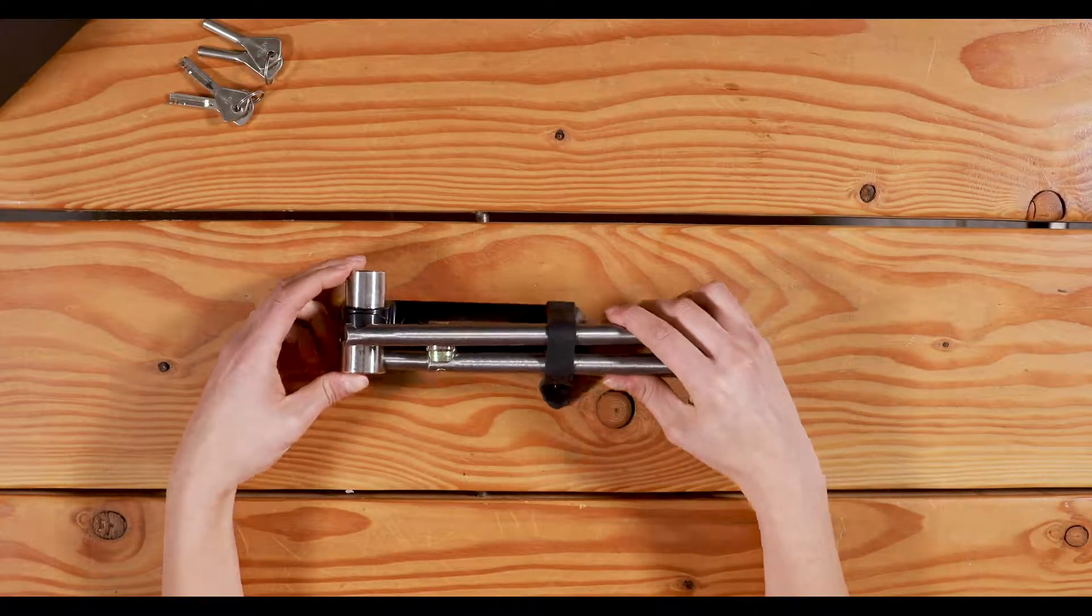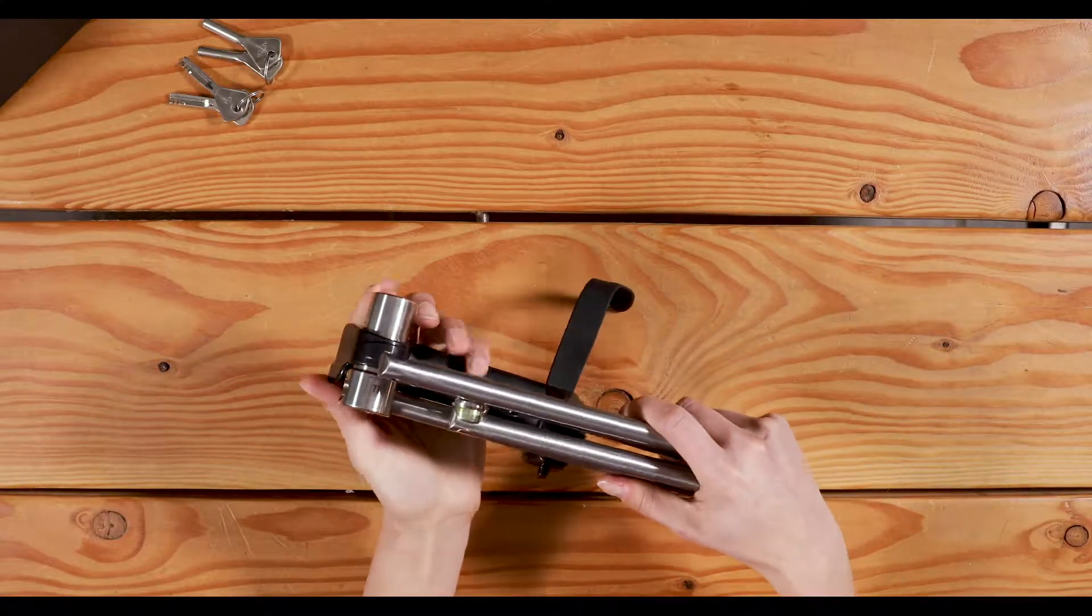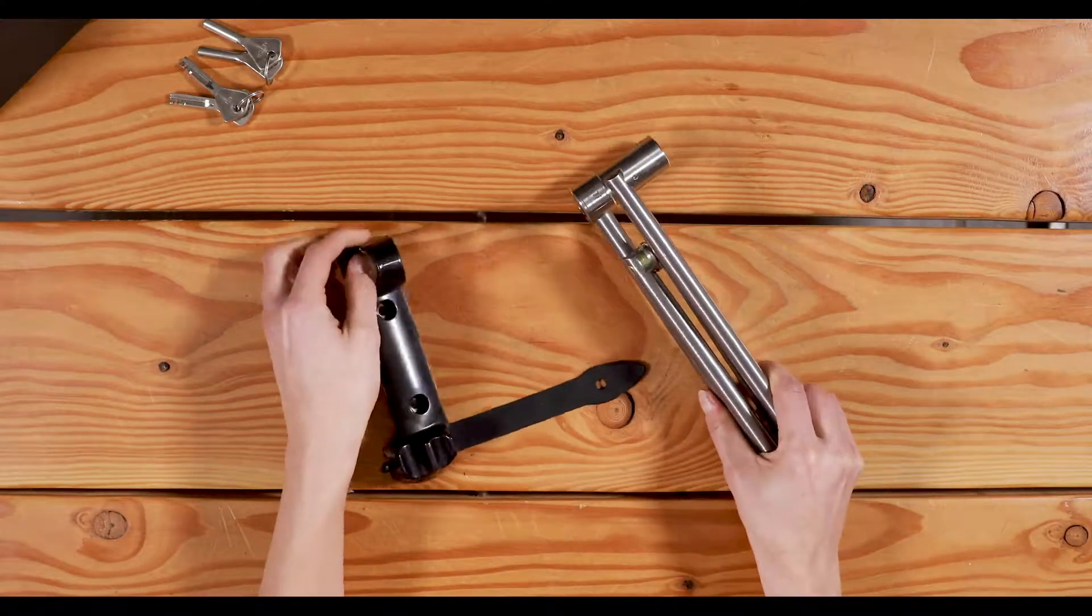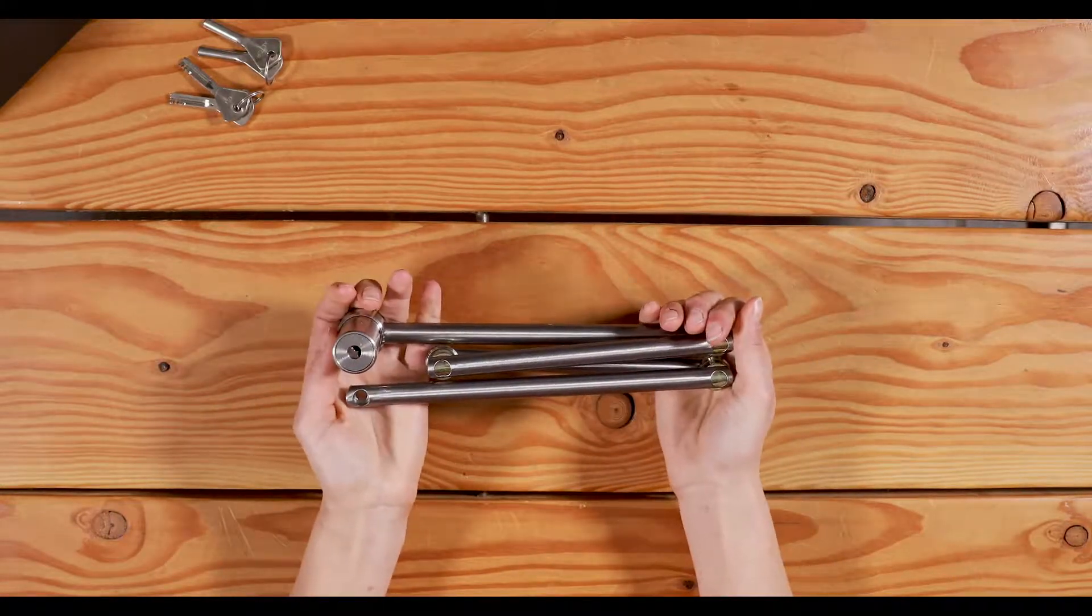To take the Apex TI out of the mount, simply unattach the strap and push it out. As you can see, the mount can be attached using the included screws. The Apex TI is the only lock on the market that